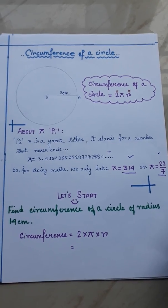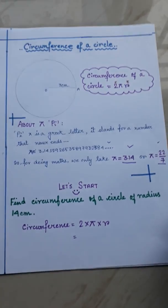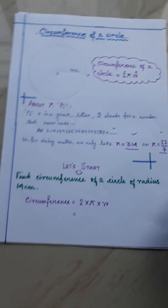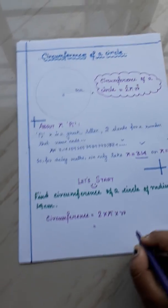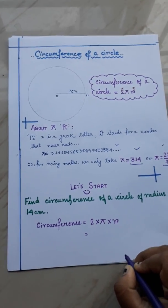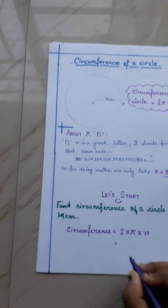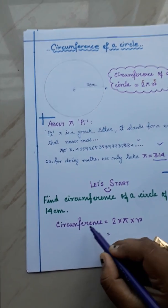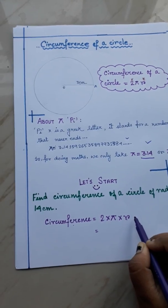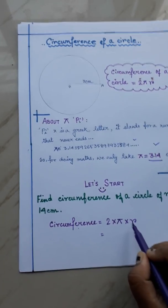Let's start doing the sum. Find circumference of a circle of radius 14cm. Here radius is given. We just have to find out the circumference of the circle. How we will do? As we know, circumference equals to 2 pi r. At first, we will write down the formula.